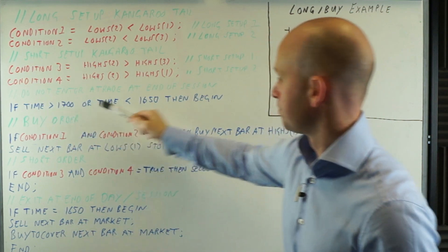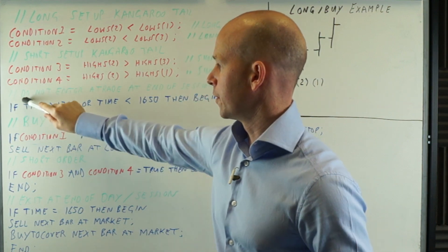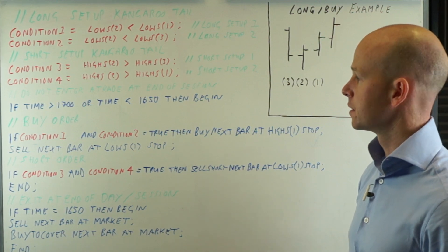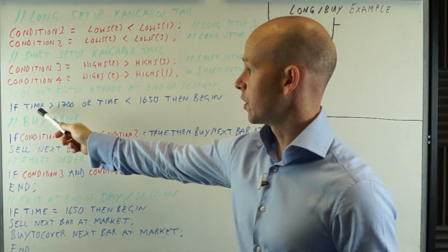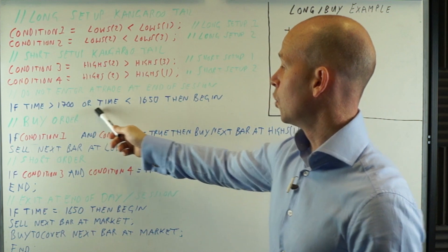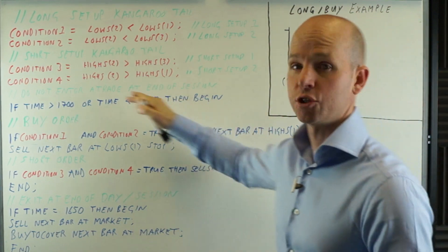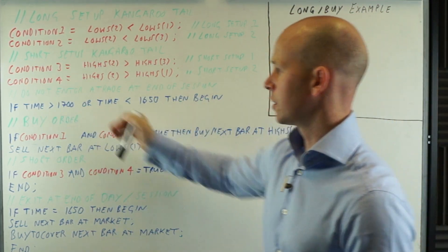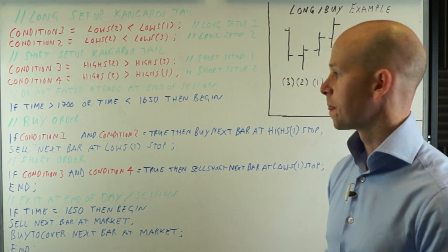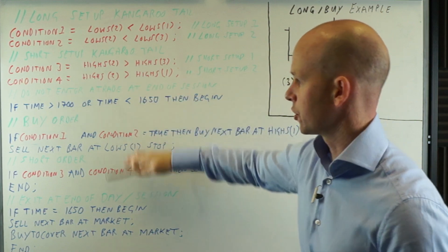Let's start with, this is the main entry orders. So first of all, I'll put a note here, do not enter a trade at the end or towards the end of the session. So what I'm saying is we only want to trade, so if the time is greater than 1700, which is, so just as the session starts, or the time is less than 1650, it's ten minutes from the end of the session, then begin. So now we can actually start our code. So we're not going to be taking a trade between 1650 and 1700. There's no chance of us getting in a trade at the end of the session.